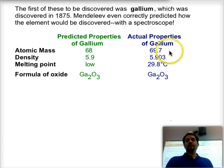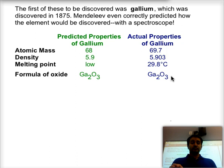When we found out gallium, 69.7, the density is almost identical at 5.903. It has a low melting point at just 30 degrees Celsius, and it has a formula of two atoms of gallium for every three atoms of oxygen for the oxide. So Mendeleev was able to predict very carefully all the properties of this particular element.